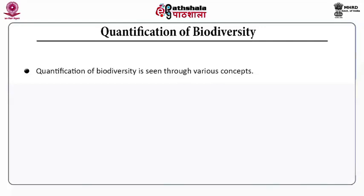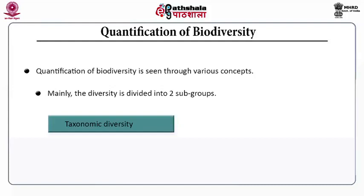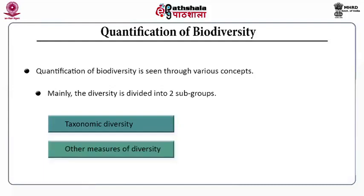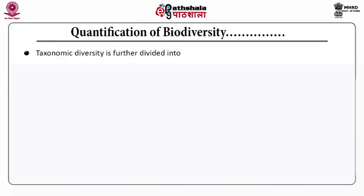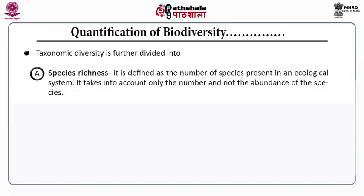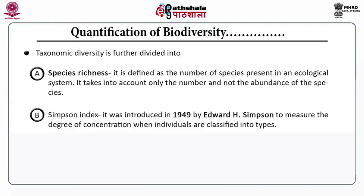Quantification of biodiversity is seen through various concepts. Mainly, the biodiversity is divided into two subgroups: taxonomic diversity and other measures of diversity. Taxonomic diversity is further divided into species richness. Species richness is defined as the number of species present in an ecological system. It takes into account only the number and not the abundance of the species.